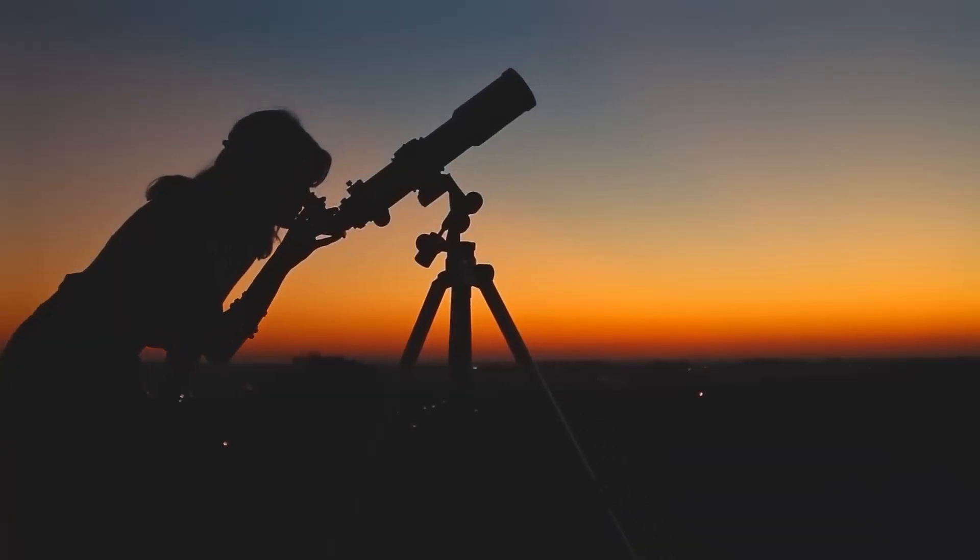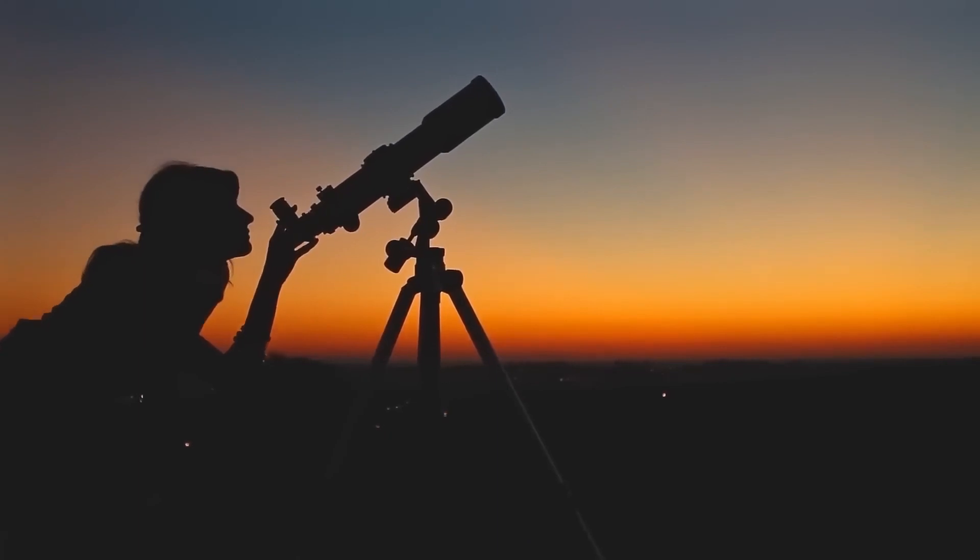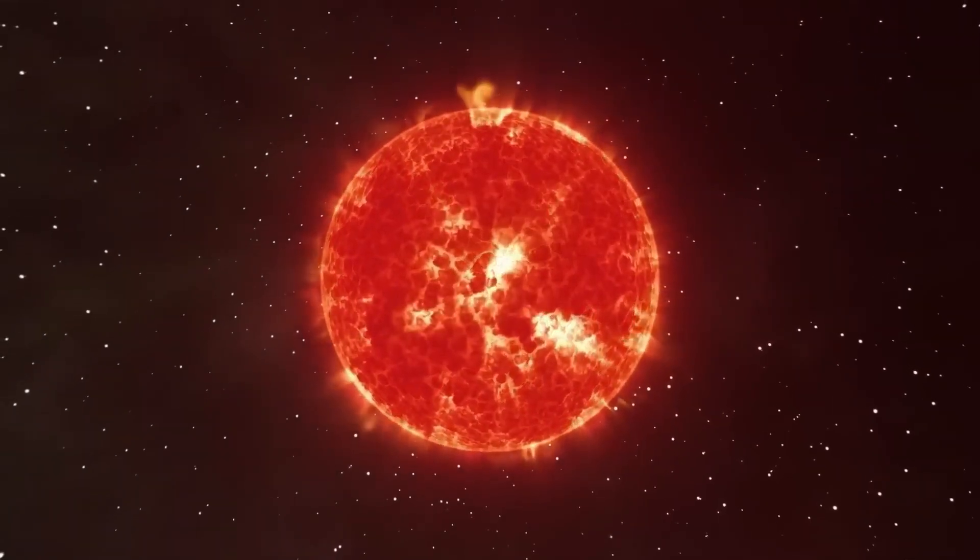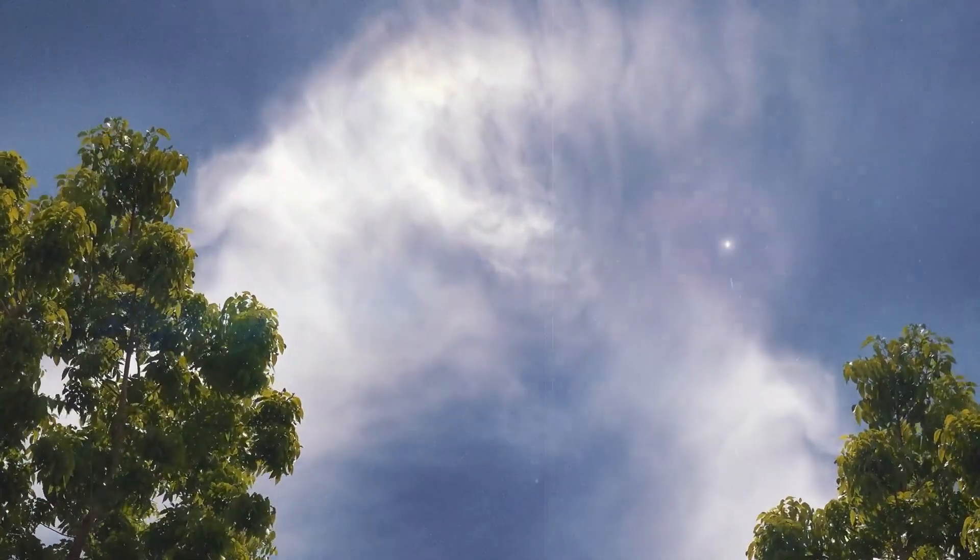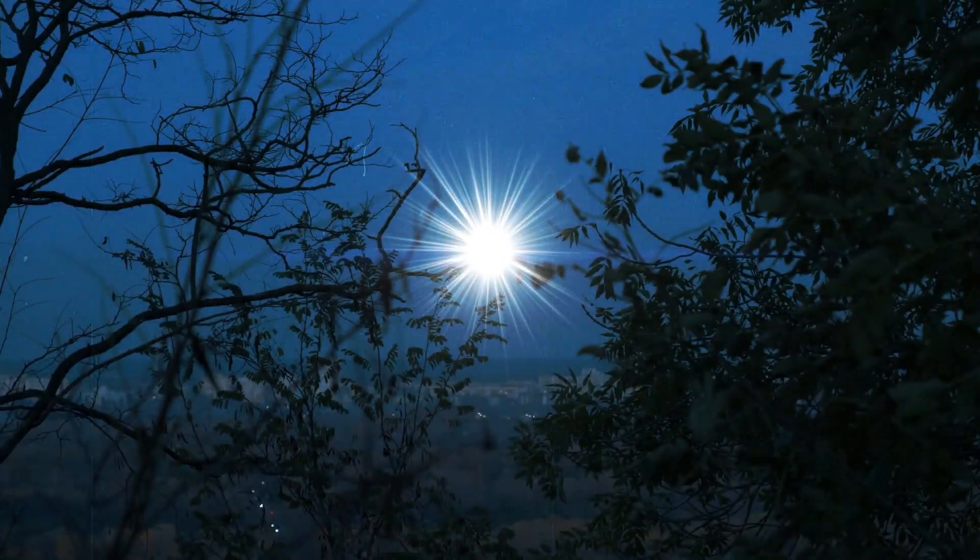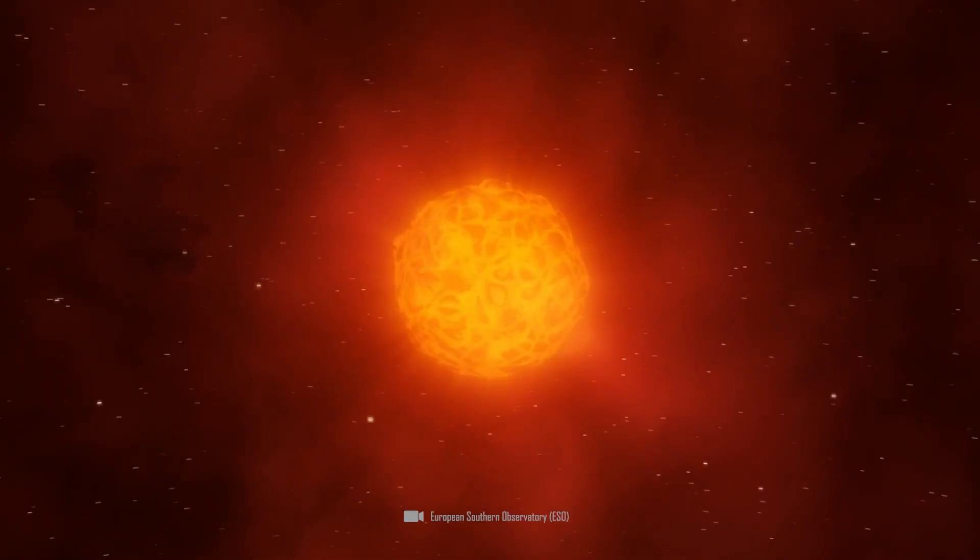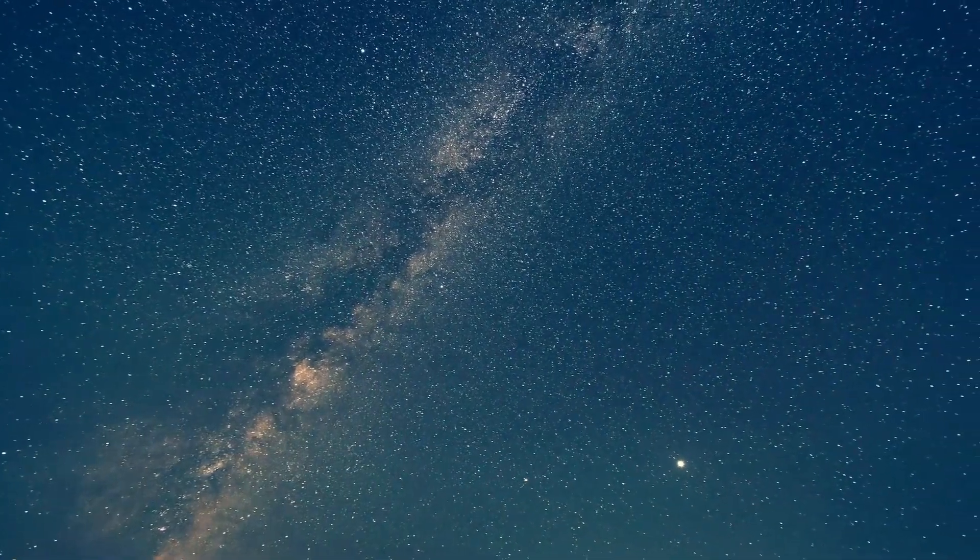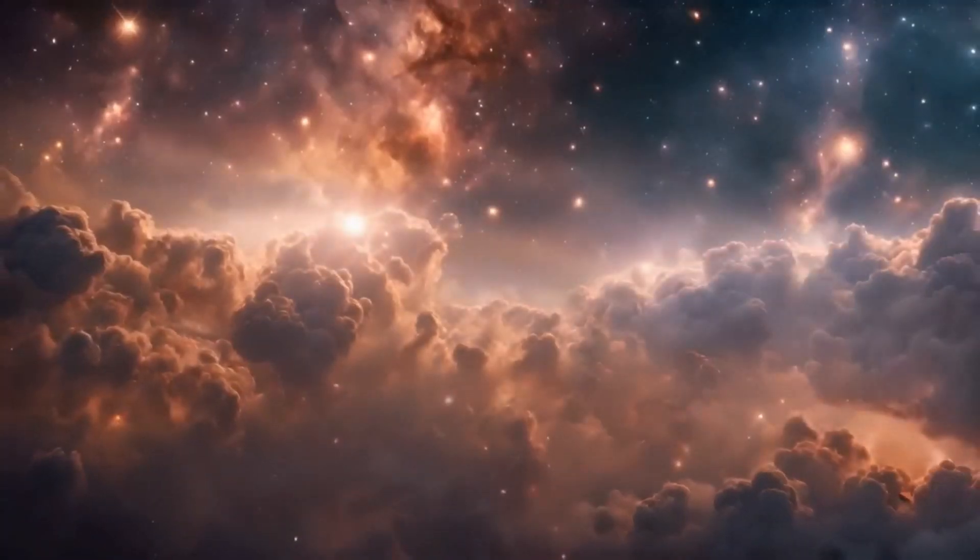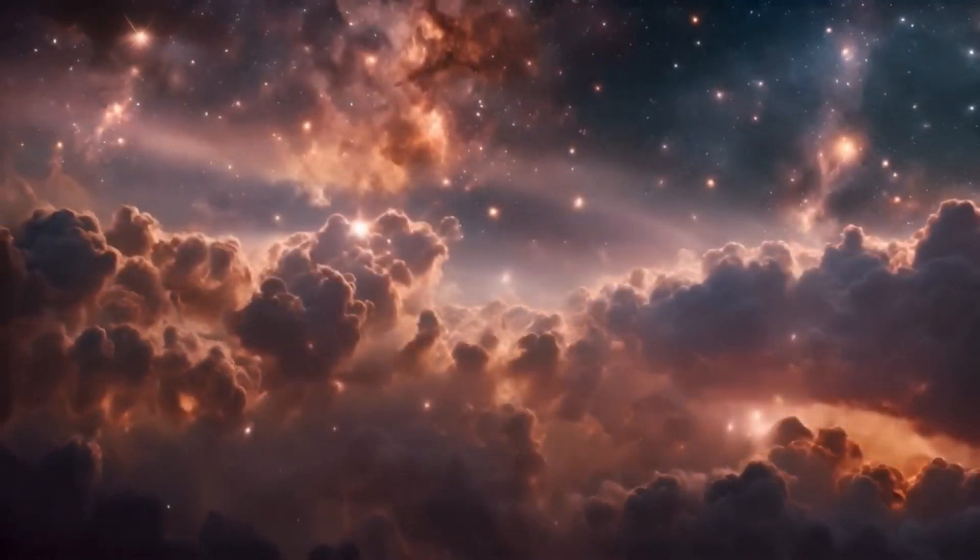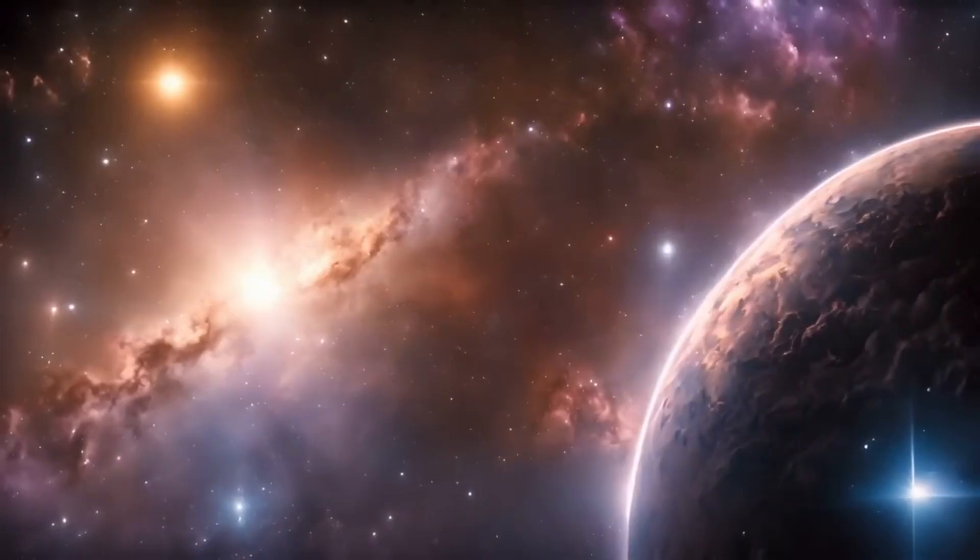Betelgeuse is easily recognized by its vivid yellow-red hue. This star, sometimes referred to as Alpha Orionis, is the second brightest in the constellation, trailing only the blue supergiant Rigel. Owing to its adaptability and peculiar moniker, Betelgeuse is an intriguing subject for investigation and scrutiny.